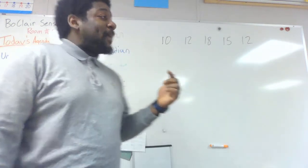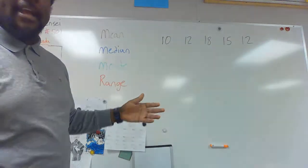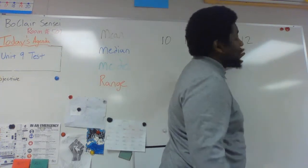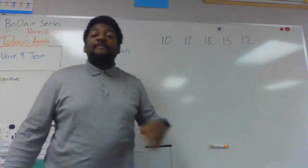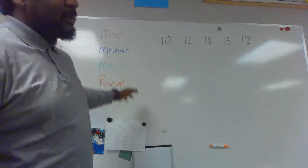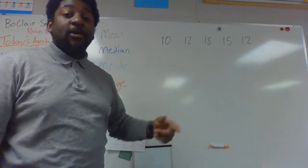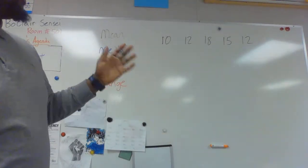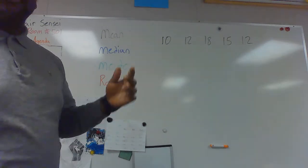So, my data set or my group of numbers right now are 10, 12, 18, 15, and 12. Five numbers. We'll talk about some more examples with mean, median, mode, and range, but mean specifically tomorrow. But today, all of the examples are going to have probably an odd amount of numbers. So five, seven, three numbers, just to make it a little bit easier when we solve some other stuff.